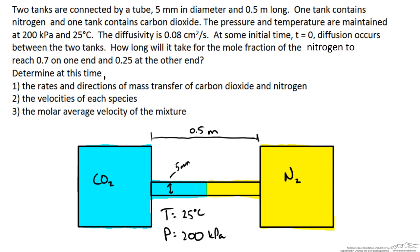We want to know how long it will take for the mole fraction of the carbon dioxide to reach 0.7 on one end and 0.25 at the other end. At this time determine the rates and directions of mass transfer of the carbon dioxide and nitrogen, the velocities of each species, and the molar average velocity of the mixture.